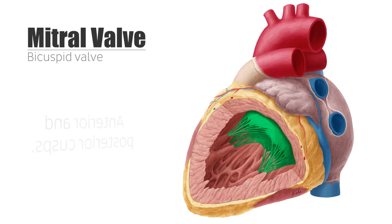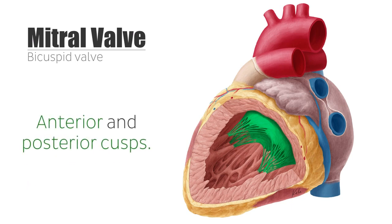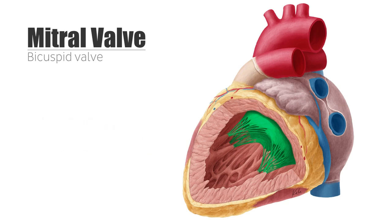The mitral valve has an anterior and a posterior cusp. The cusps are named according to their position on the individual valve, so when referring to the cusps, it's important to identify which valve it belongs to.